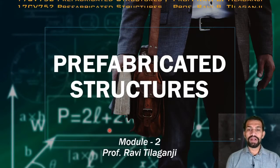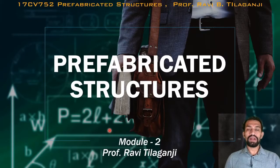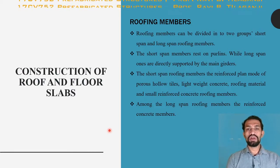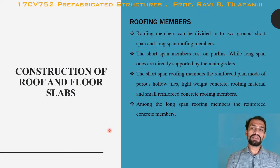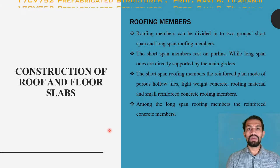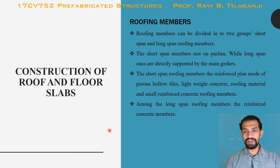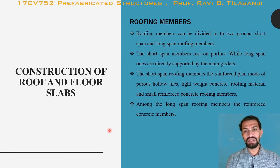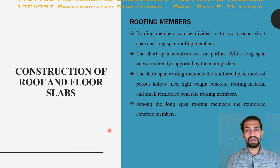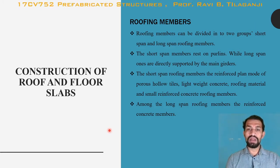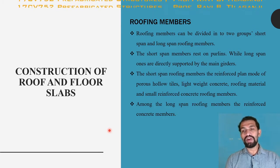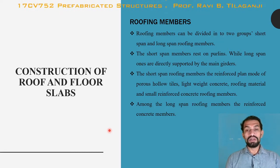Welcome to prefabricated structure module 2, which covers prefabricated components. This video covers construction of roof and floor slabs. Roofing members can be divided into two groups: short span and long span roofing members, similar to the one-way slab and two-way slab in RCC construction. Short span members rest on purlins while long span members are directly supported by the main girders.